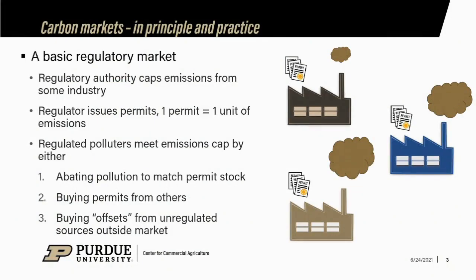If you're one of these regulated polluters, you can pollute as much as you want, but you have to have one permit for each unit of pollution you generate. Generally these caps are binding — the amount of pollution being generated is larger than the permit cap, so you have to scale back your emissions. One option is you can scale back your own emissions if you find it cheap to change technology. Alternatively, permit markets offer you the opportunity to effectively pay somebody else to reduce emissions for you.